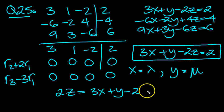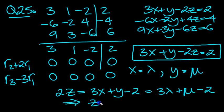So 2z, so then that would be 3 lambda plus mu minus 2. So that tells us then, divide by 2 all the way through. 3 lambda over 2 plus mu over 2 minus 2 over 2, which is 1.